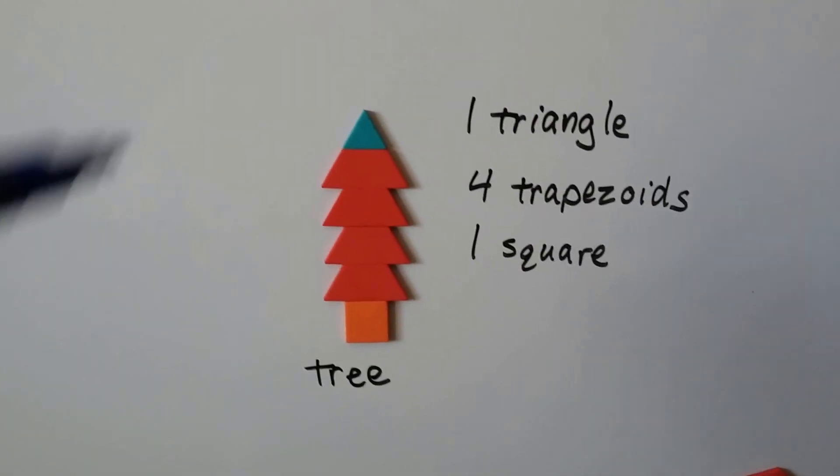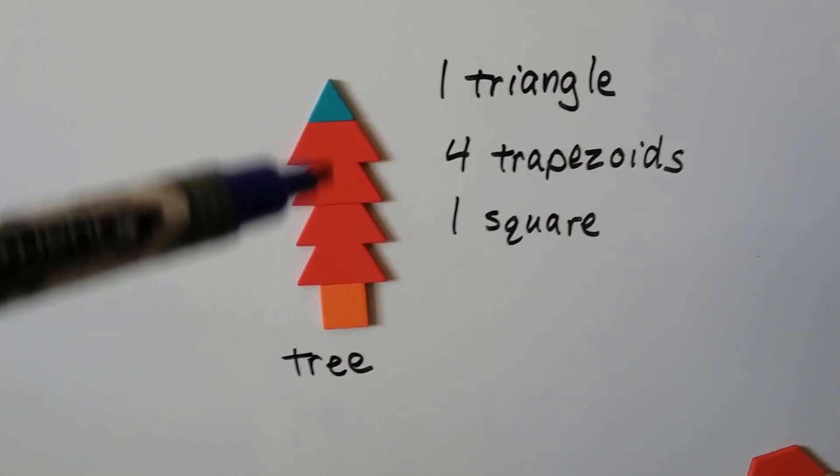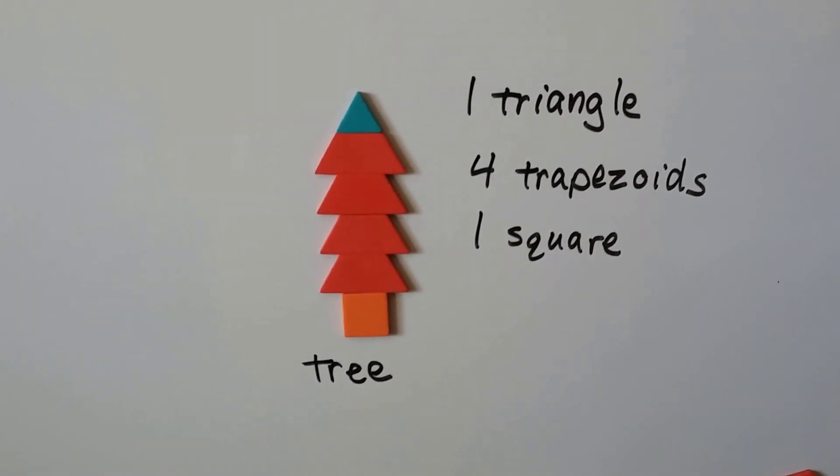I took one triangle, four trapezoids, and a square, and made a tree.